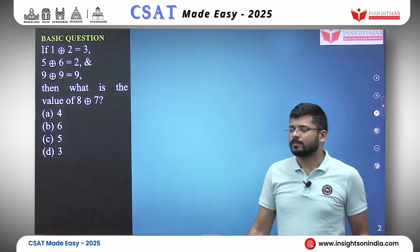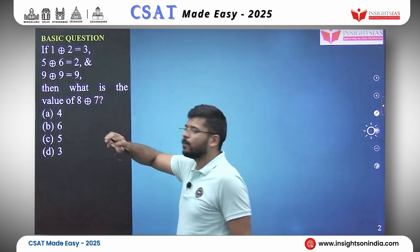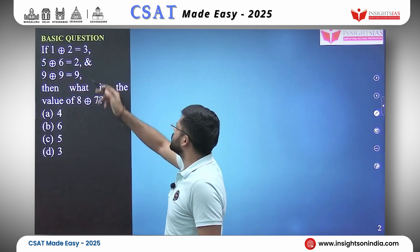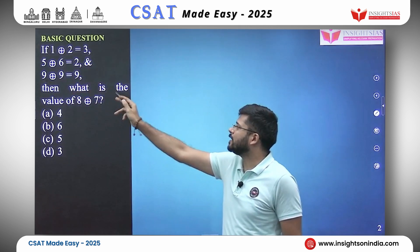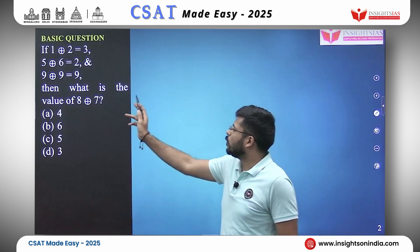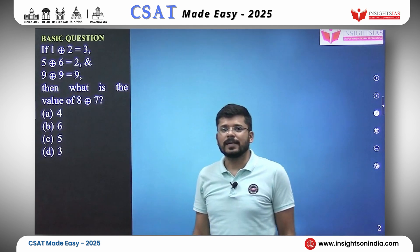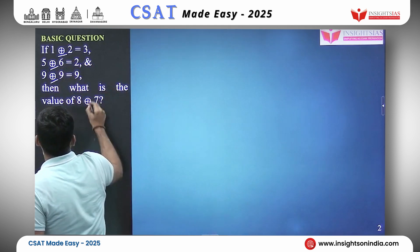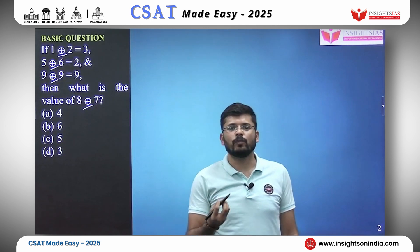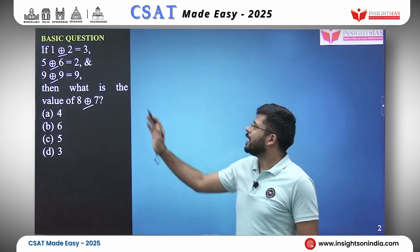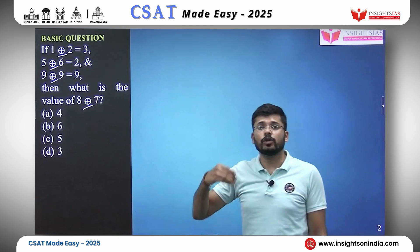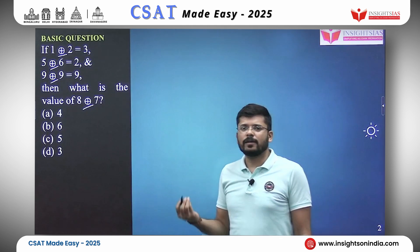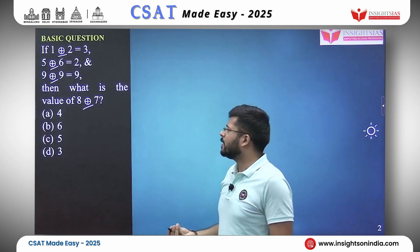This is your first question. If 1 circled-plus 2 equals 3, 5 circled-plus 6 equals 2, and 9 circled-plus 9 equals 9, then what is the value of 8 circled-plus 7? This notation signifies some kind of mathematical operation — it can be addition, subtraction, a power, multiplication, division, or something more complicated.